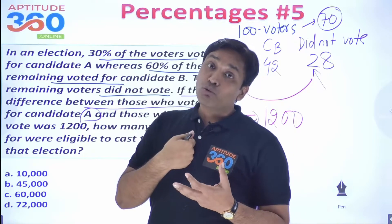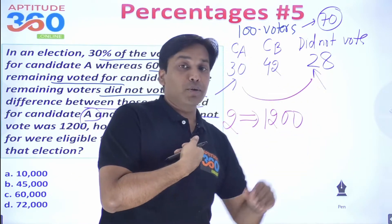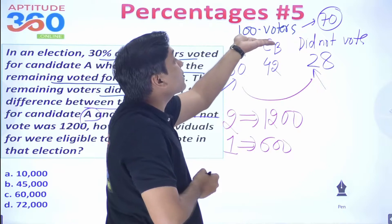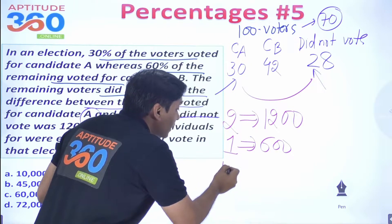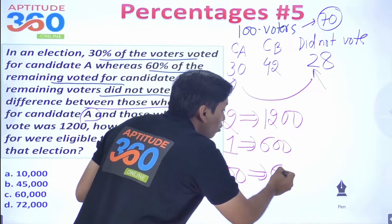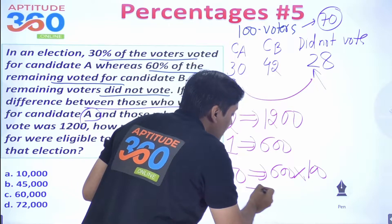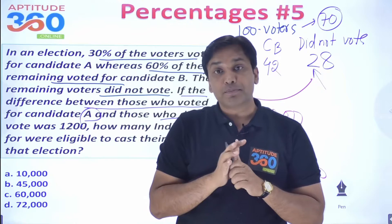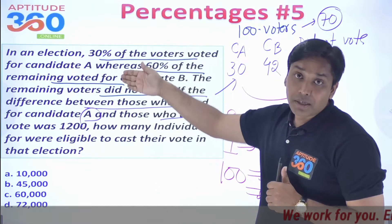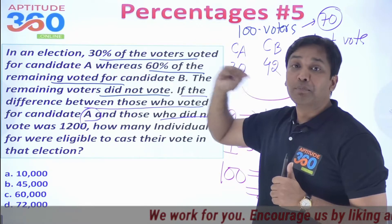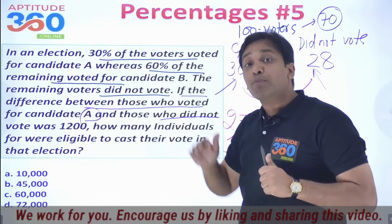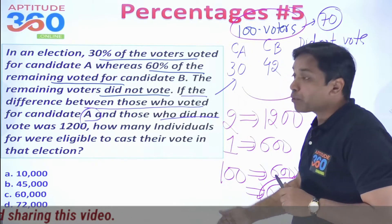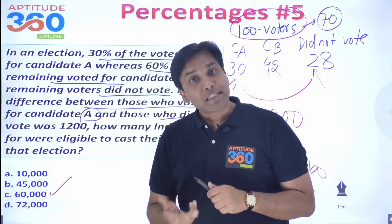So our 2 corresponds to 1,200 in the real problem. By unitary method, 1 unit = 600. Since we took 100 total voters, the real total = 600 × 100 = 6,000 voters. This is the power of simplifying by taking 100 voters instead of using variables.